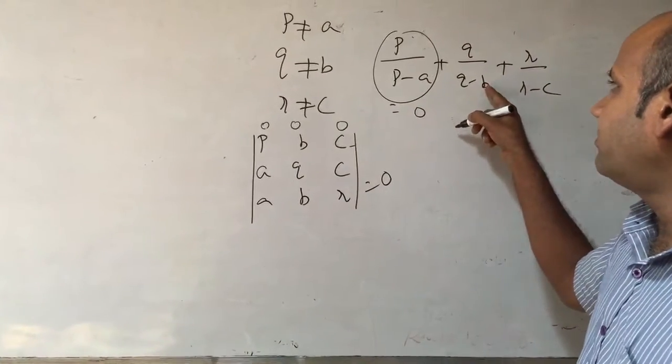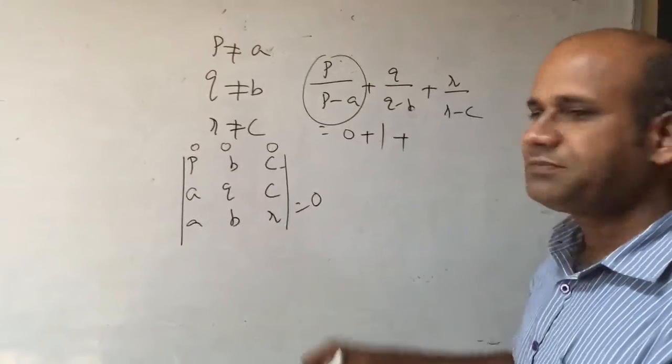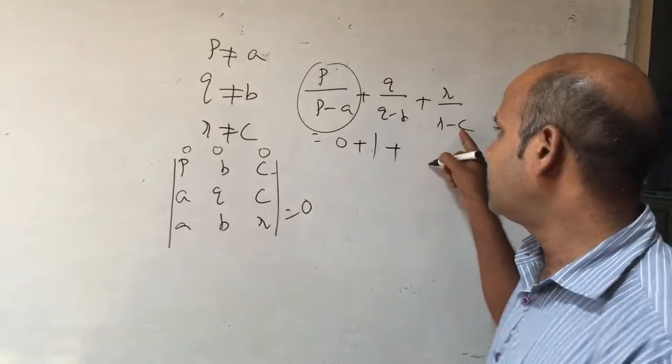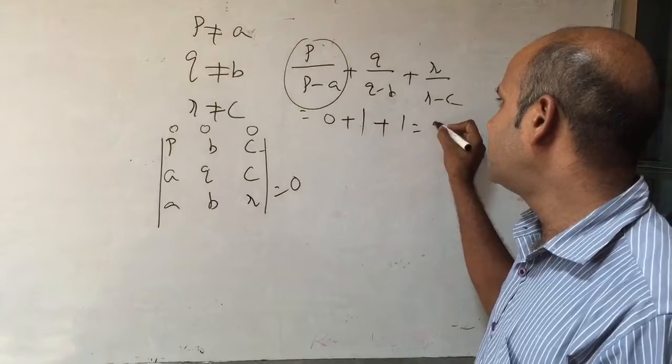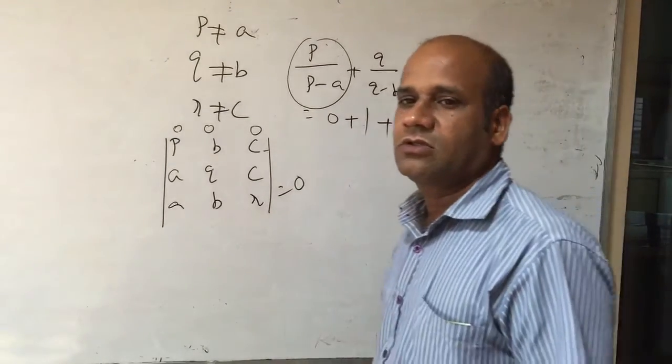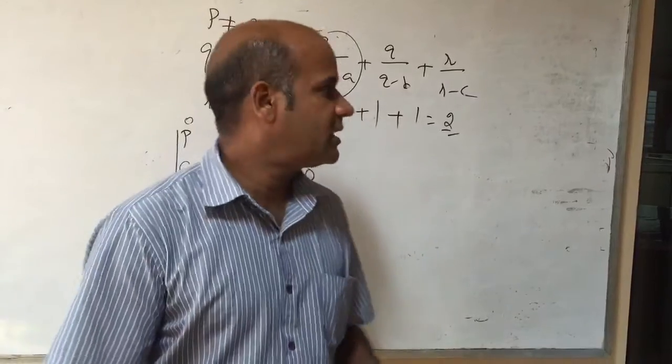Now the value of B is 0, so Q/(Q-0) is 1. And my value of C is 0, therefore R/(R-0) is 1, which equals 2.